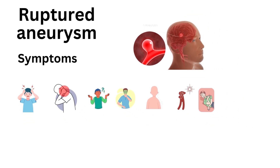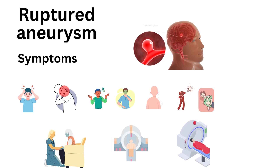If you have symptoms of a brain aneurysm, your healthcare provider will give you a physical exam and recommend imaging studies, such as an angiogram, a CT scan, or an MRI.